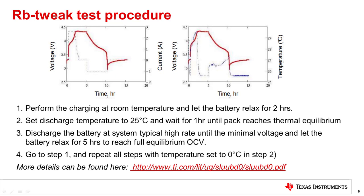Here is the RB tweak test procedure. Charge the battery at room temperature and let it relax for at least 2 hours. Then set the discharge temperature to 25 degrees Celsius and wait 1 hour for the pack to reach thermal equilibrium. Discharge the battery at the system's typical high rate until the minimum voltage, and let the battery relax for 5 hours to reach full equilibrium. Repeat all the above steps with temperature set to 0 degrees Celsius, 2 hours after charging. These two data sets must be fed to the online GPC tool, and the correct RB low and thermal model parameters will be obtained. Further details can be found in the link shown.